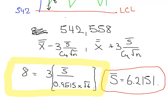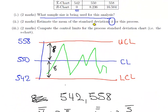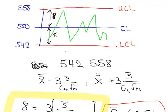Estimate the mean of the standard deviations for this process. So that's that one done. N equals 6 for the first one. S bar equals 6.2151 for the second one. Now, compute the control limits for the process standard deviation for the S chart. Let's go down to our control limits here and let's do that.